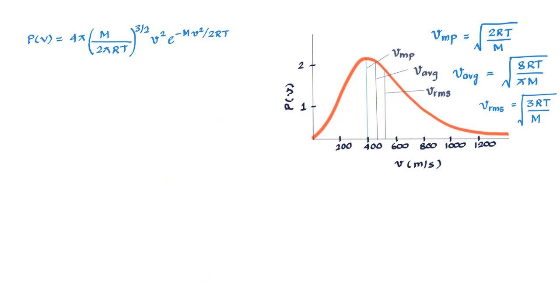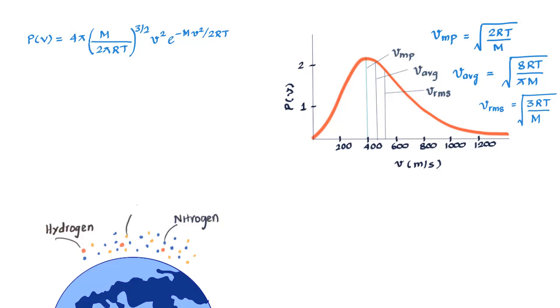And the reason for it is that while nitrogen and oxygen molecules are on an average moving slowly enough to stay in the atmosphere, the hydrogen molecules are moving very fast.